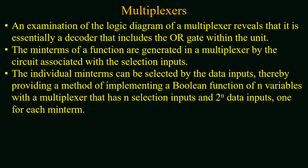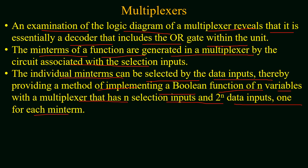An examination of the logic diagram of a multiplexer reveals that it is essentially a decoder which includes an OR gate within the unit. The minterms of the function are generated in a multiplexer by the circuit associated with the selection lines. The individual minterms can be selected by the data inputs, thereby providing a method of implementing a boolean function of n variables with a multiplexer that has n selection input lines and 2^n data inputs — one for each minterm.